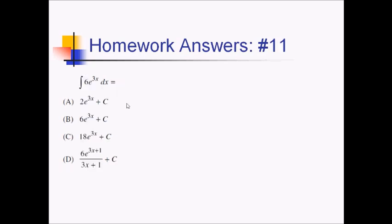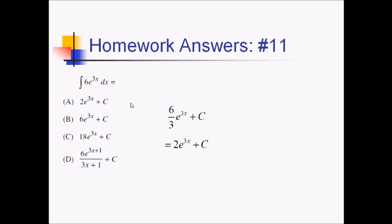On this problem, we want the antiderivative of 6e to the 3x. If you wrote 6e to the 3x, that's almost the antiderivative. But, since you have this linear inner function, you have to divide by the derivative of that linear inner function. So, that's going to be 6 over 3 e to the 3x, which is 2e to the 3x, plus c — which gives us answer choice A.